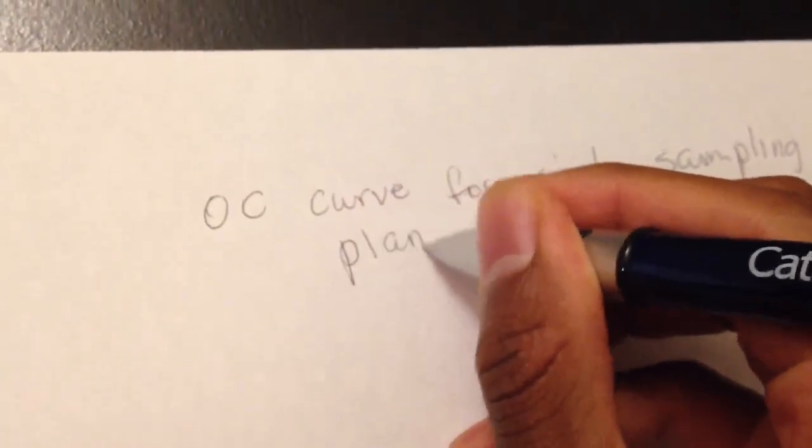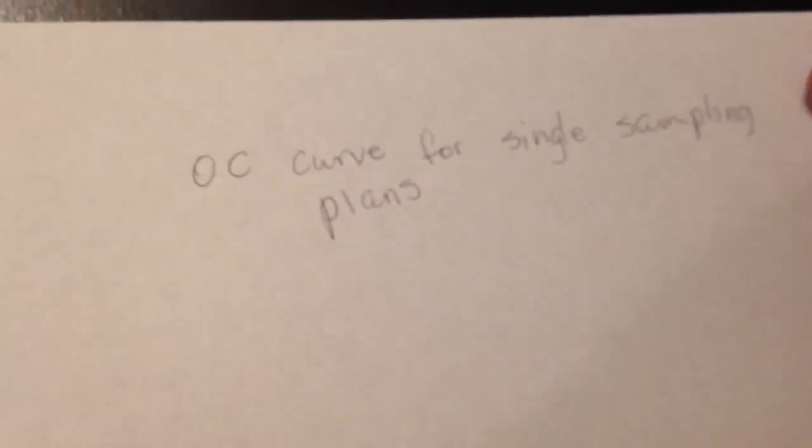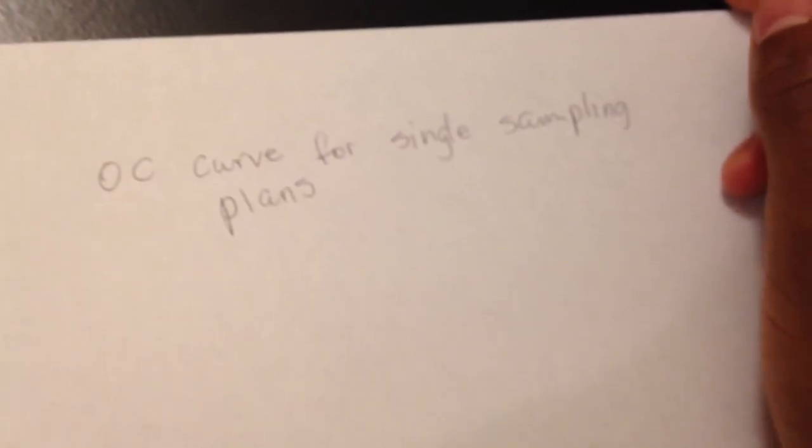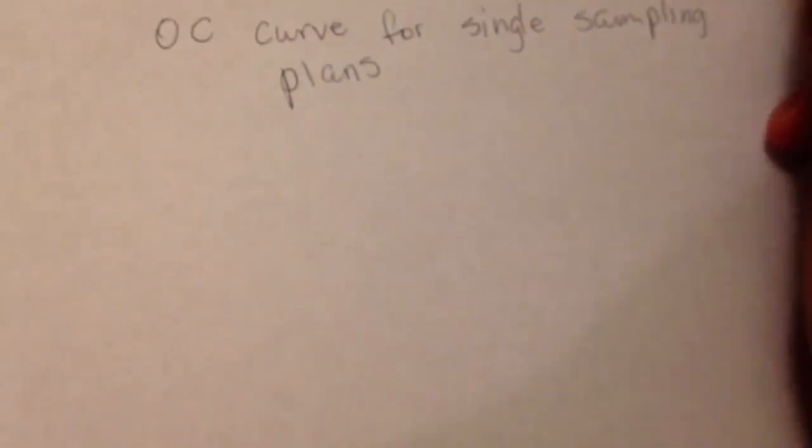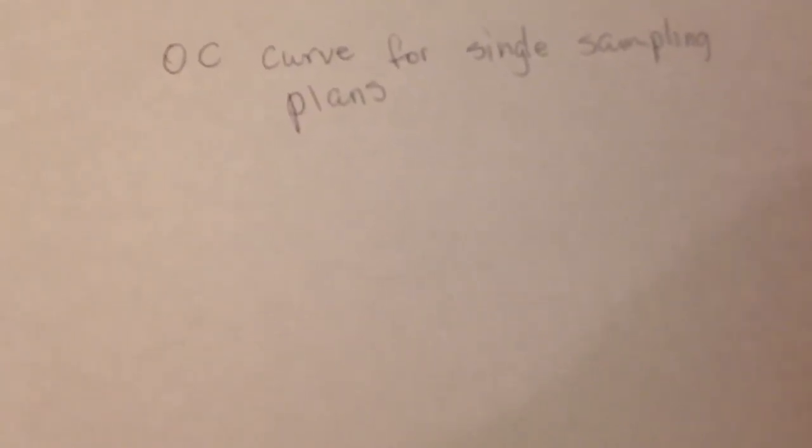There's many different types of sampling plans: single, double, multi, sequential. OC curves is just a great way of evaluating your sampling plan. Usually it's your percentage of non-conforming versus your percentage of acceptance lot.